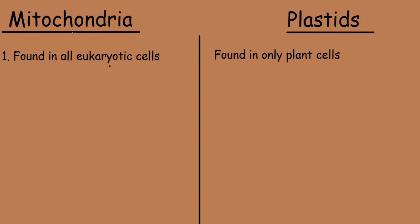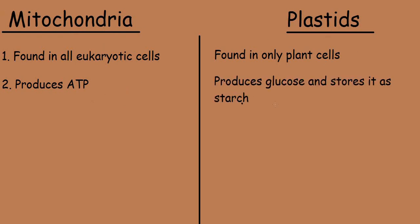The second point: mitochondria produces ATP, and plastids produce glucose and store it as starch.